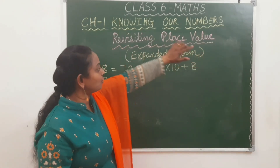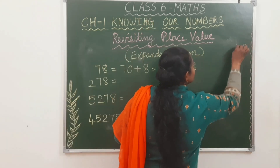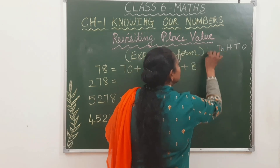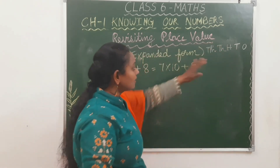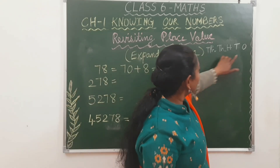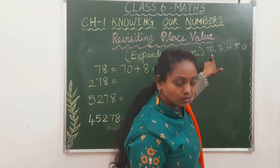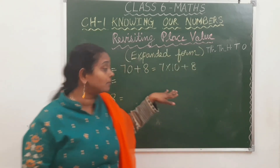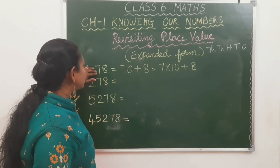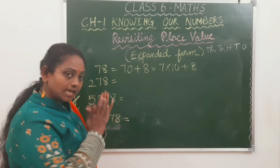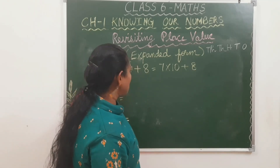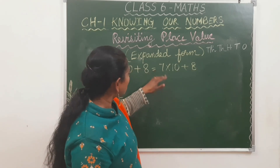Revisiting place value. You all know what place value is: 1s, 10s, 100s, 1,000s, and 10,000. These place values you already know. Revisiting place value means we are going to look at expanded form — we are going to expand the place value. First, let's expand 78: 70 plus 8. We can further expand 70 as 7 into 10.